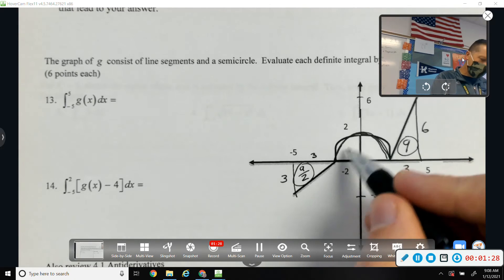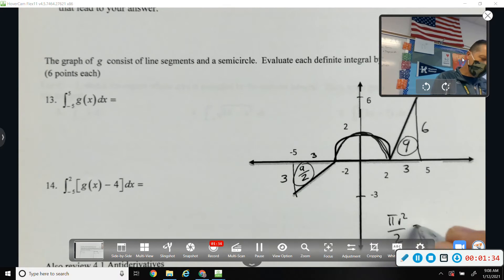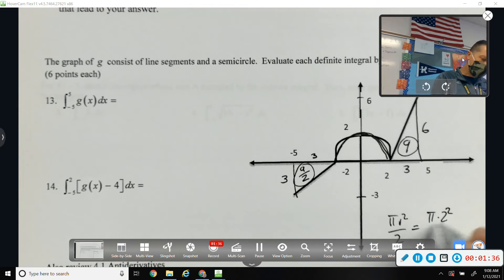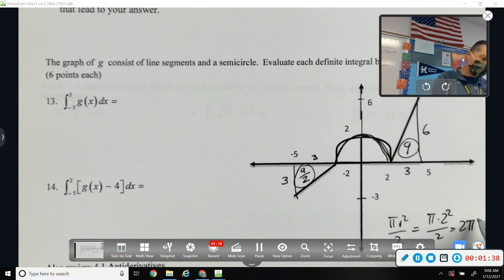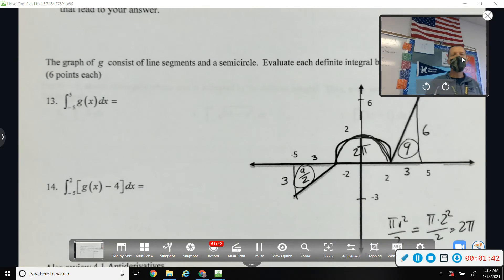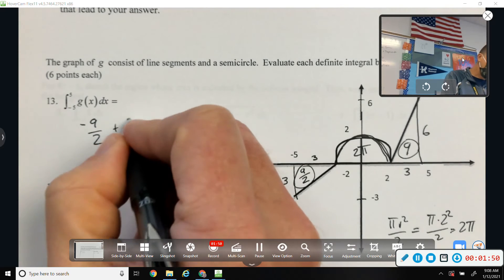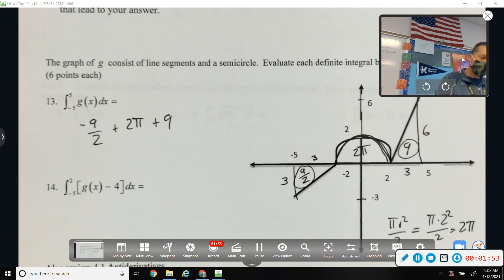And then the area of the circle, or the half circle, let's see, pi r squared over 2 would be 2 pi for the whole area. So if I'm adding up all the pieces, the first piece is underneath, so I'm going to go negative 9 halves plus 2 pi plus 9.